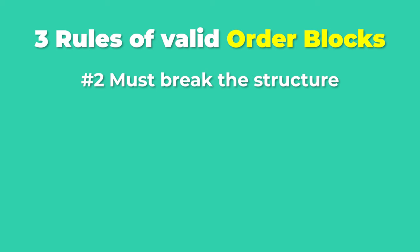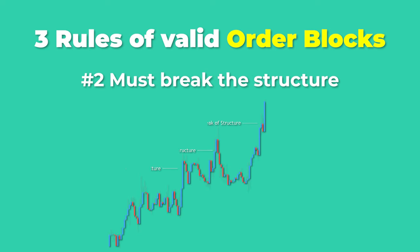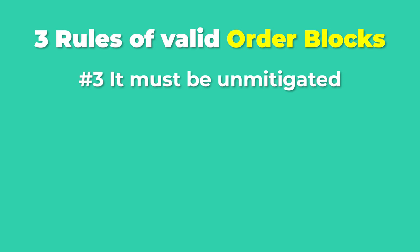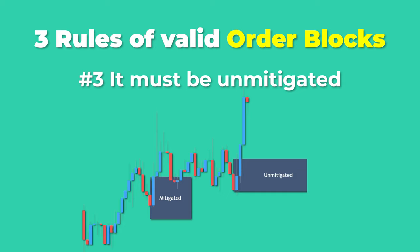Rule two: must break structure. It must lead to a break of structure. This is the first clue that the market is telling us whether it's going to continue going up in that same direction or it's going to be reversing. Rule three: it must be unmitigated. Order blocks are one-time use, so we are interested in trading opportunities for the first time price comes and taps into the order block.